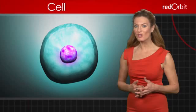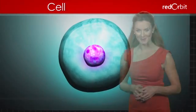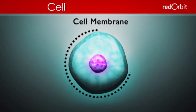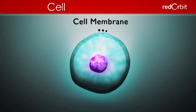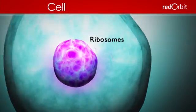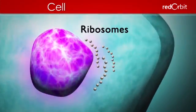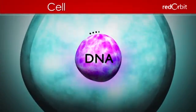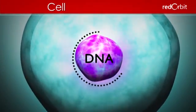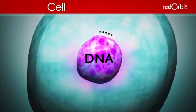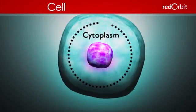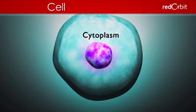Cells are the smallest structural and functional units of all living organisms. All cells have a cell membrane, which controls the flow of substances in and out of the cell. Ribosomes, which make proteins necessary for all cell functions. DNA, the genetic instructions the cell needs to make protein. And cytoplasm, the watery substance that contains all the cell's structures.